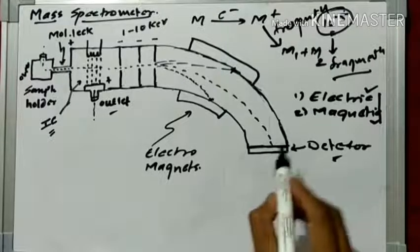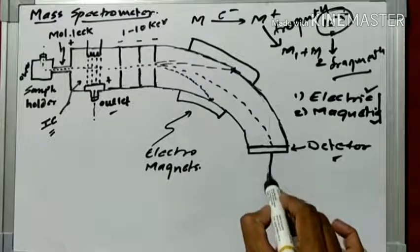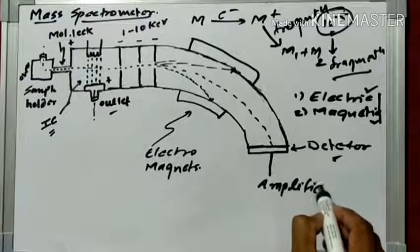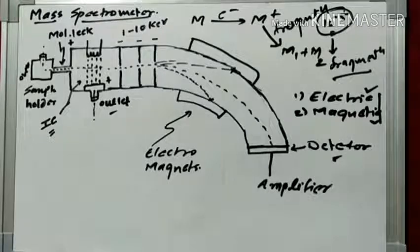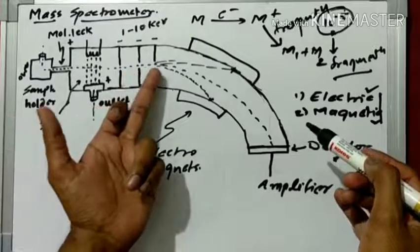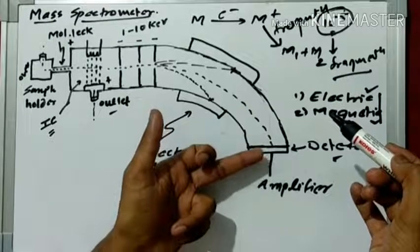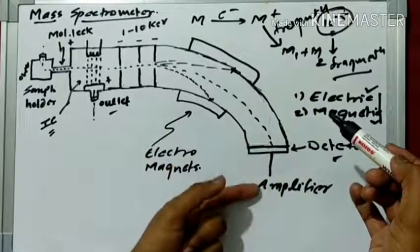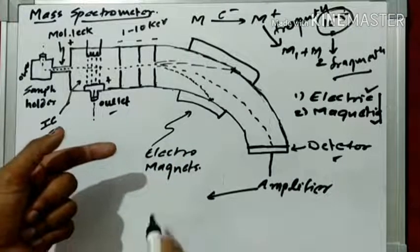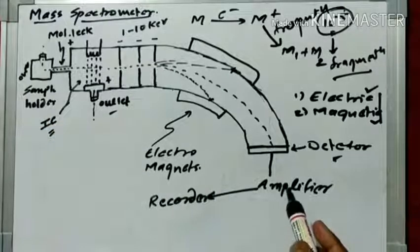After the detector, there is one more component called the amplifier. The amplifier is an instrument that multiplies the signals. The detector converts the positive ion to a current, but this current is very small, so it is multiplied by the amplifier. The amplifier then gives the signal to the recorder, and the recorder produces the spectra.